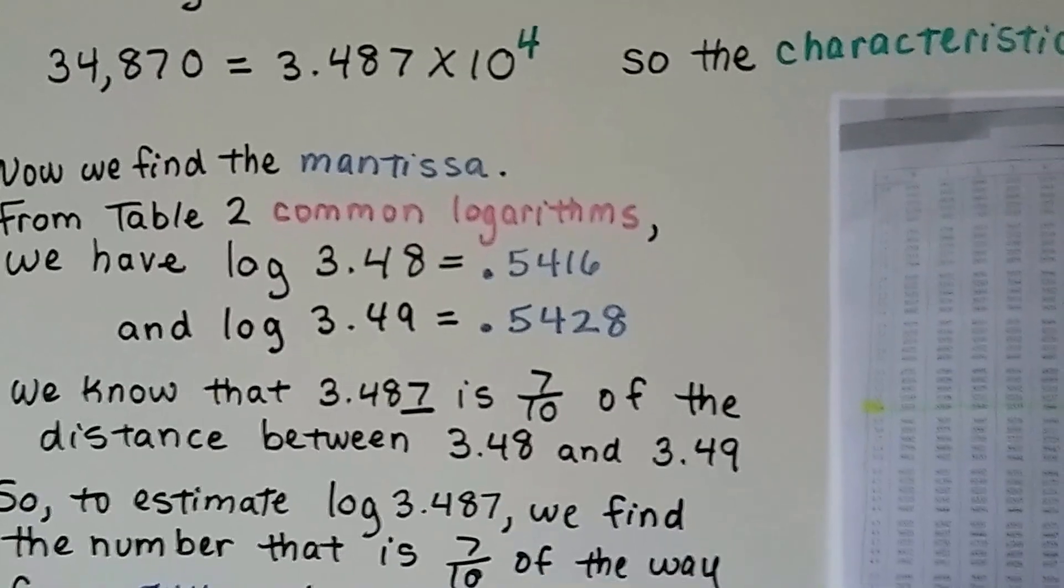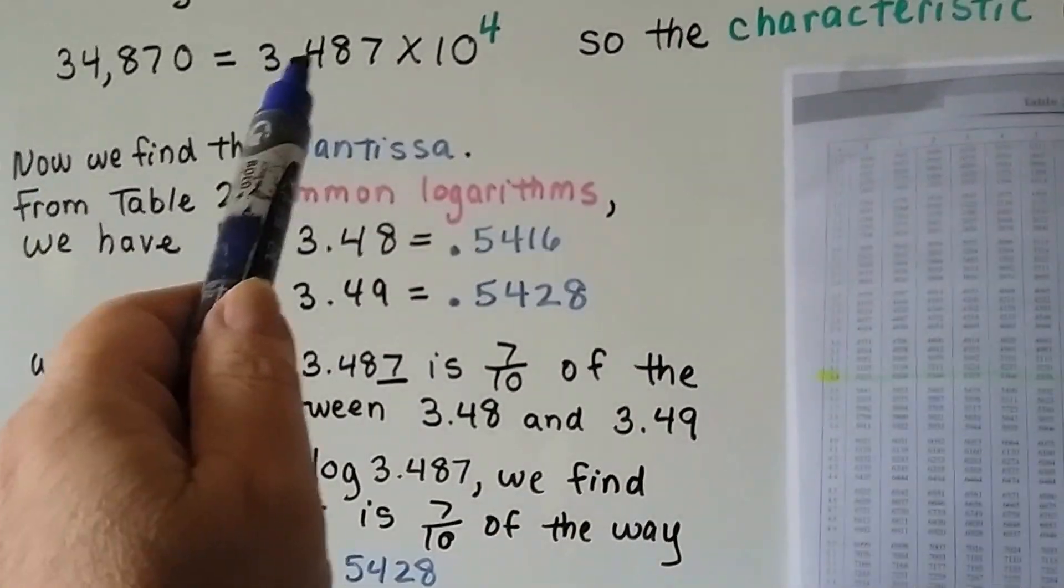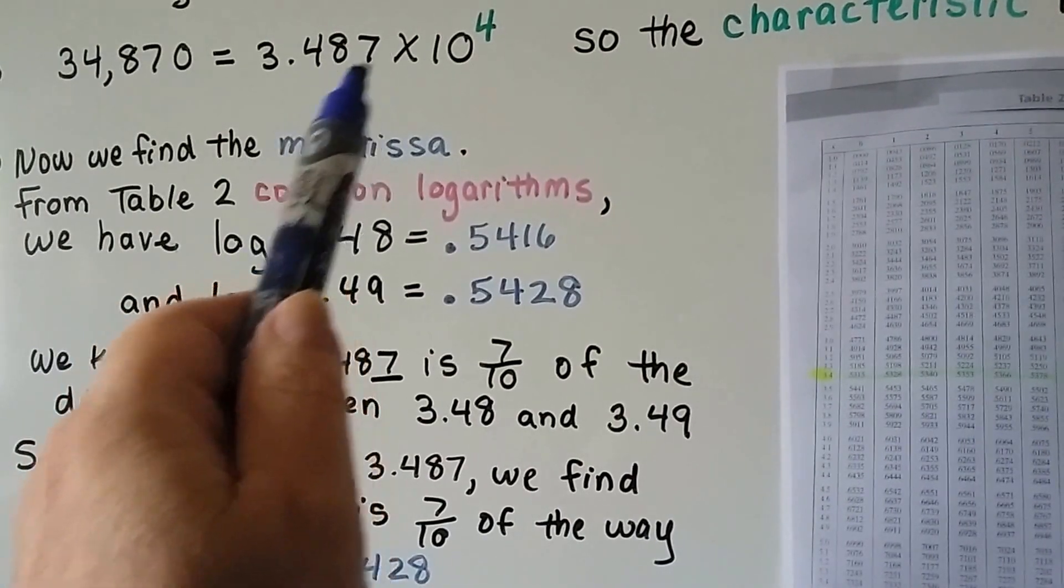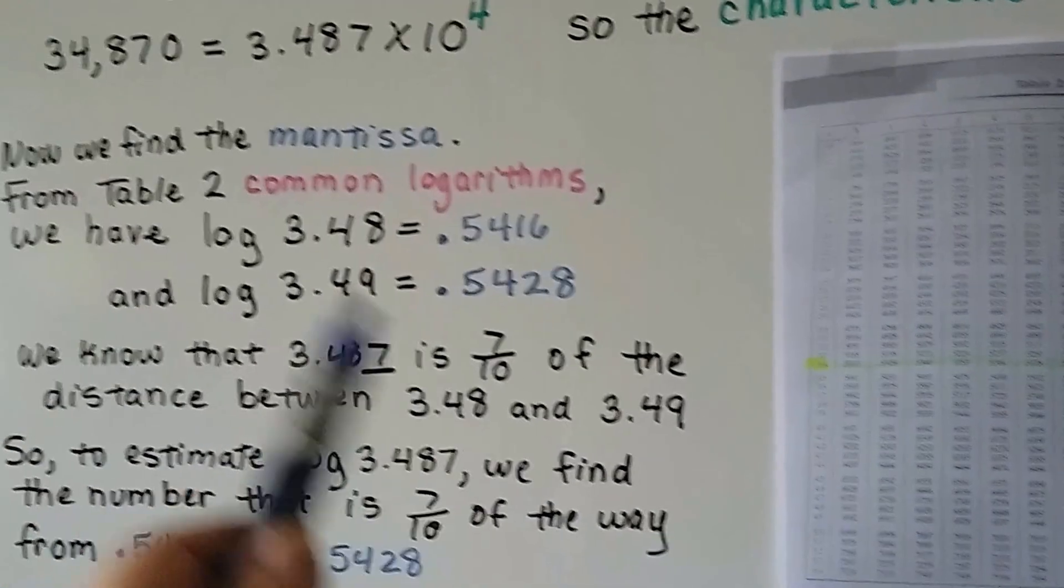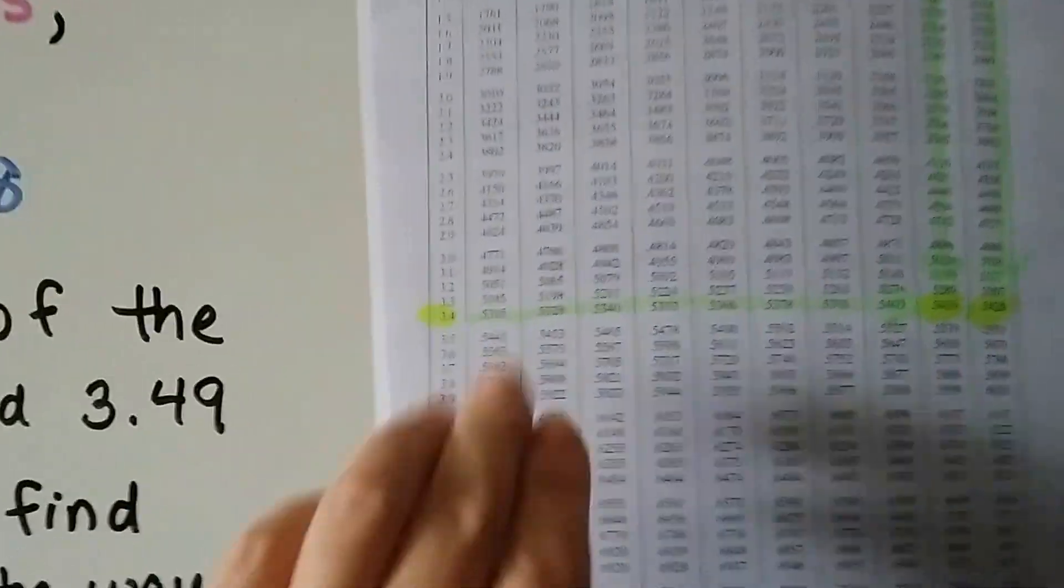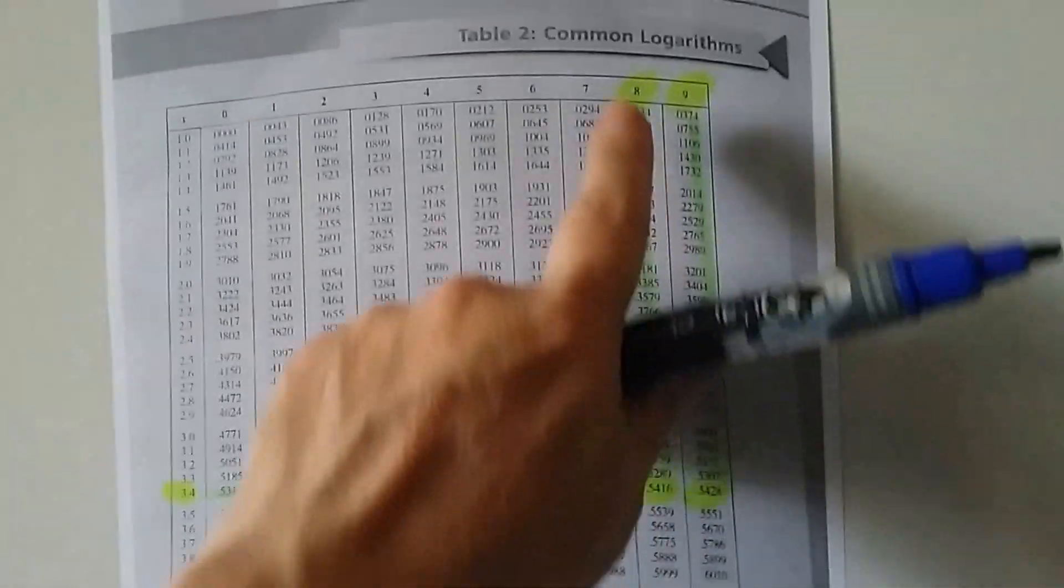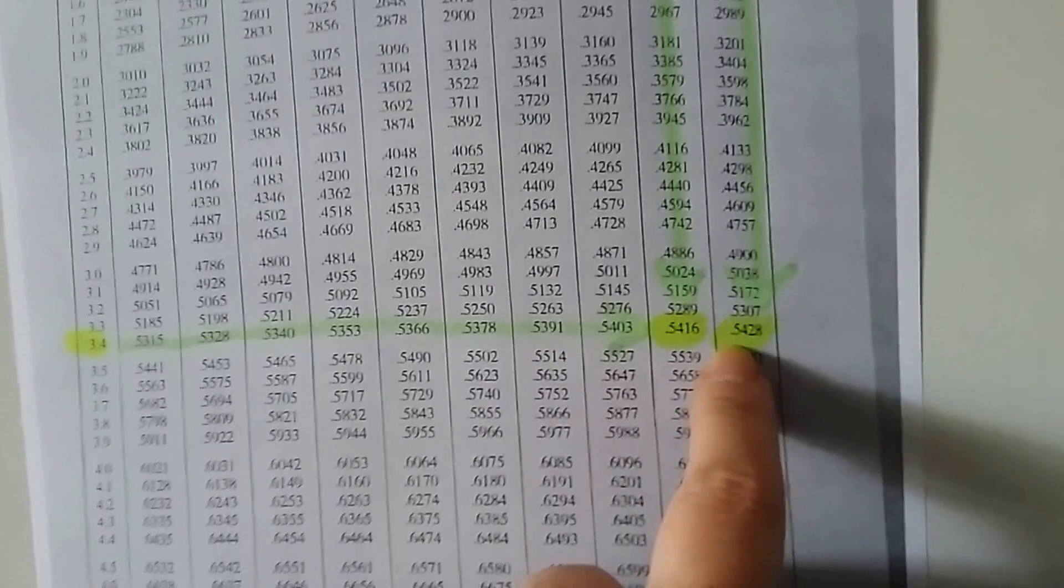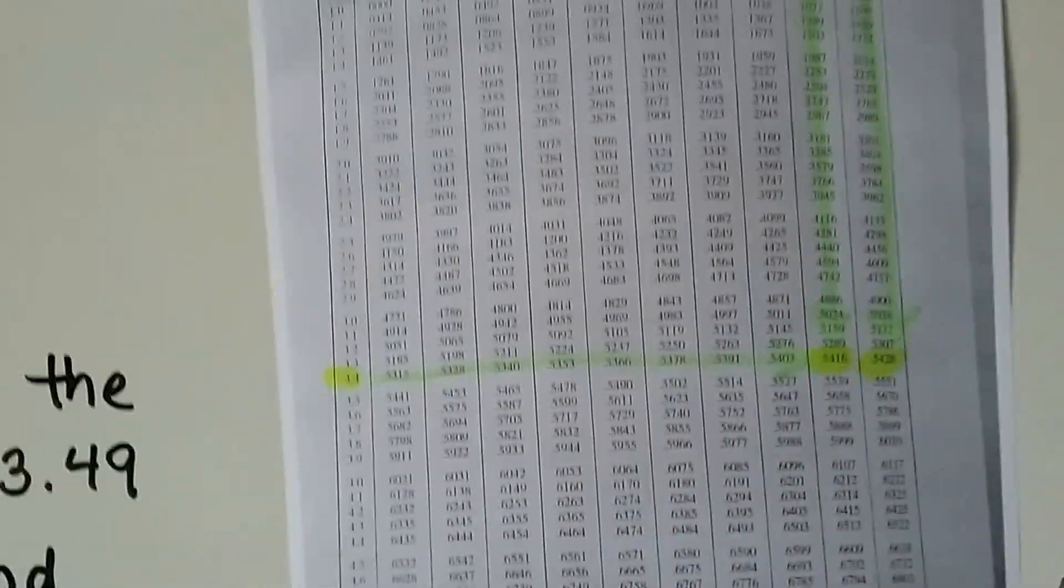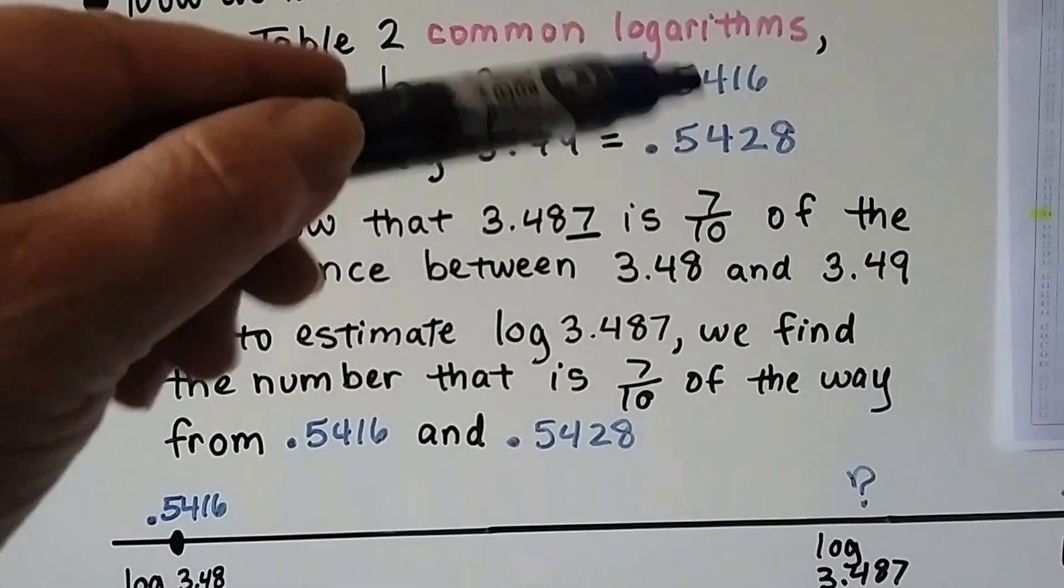Now we find the mantissa. From that table 2 of common logarithms, we've got 3.48. But it's in between 3.48 and 3.49 because of that 7, so we find both. Here's our 3.4, here's 3.48 in the 8 column, and here's the 9 column. So it's going to be in between 0.5416 and 0.5428.